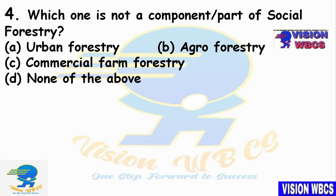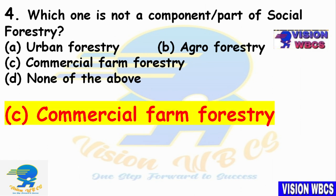Fourth question: Which one is NOT a component of social forestry? Option A — Urban Forestry. Option B — Agro Forestry. Option C — Commercial Farm Forestry. Option D — None of the above. The right answer is Option C: Commercial Farm Forestry does not come under social forestry.